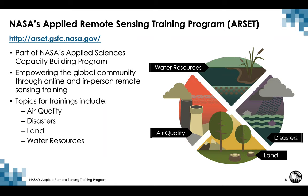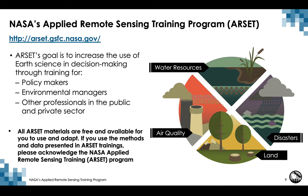NASA's Applied Remote Sensing Training Program, better known as ARSET, builds the skills to acquire and use satellite and model data for decision support. The program is part of NASA's Applied Sciences Capacity Building Program and seeks to empower the global community through online and in-person remote sensing training, covering topics related to air quality, disasters, land, and water resources. ARSET's goal is to increase the use of Earth science in decision making through training for policy makers, researchers, environmental managers, NGOs, and professionals in the public and private sectors. All ARSET materials are free and available to use and adapt, with a request to acknowledge the NASA Applied Remote Sensing Training Program.